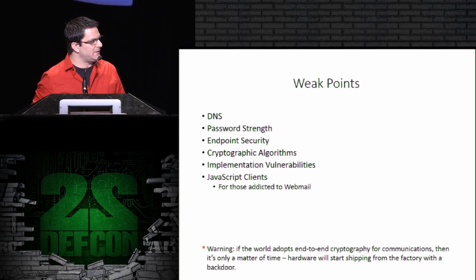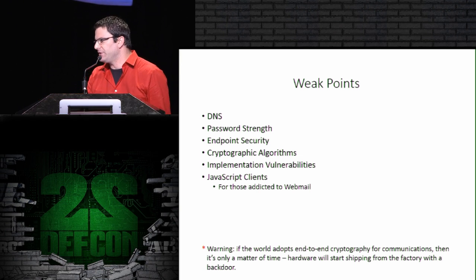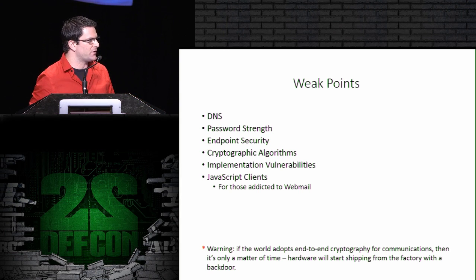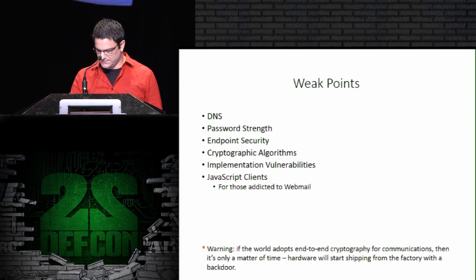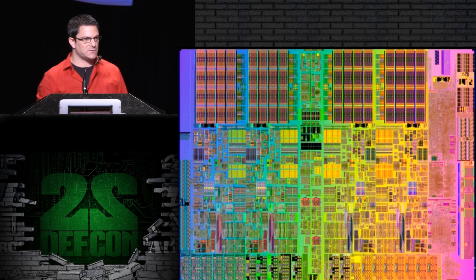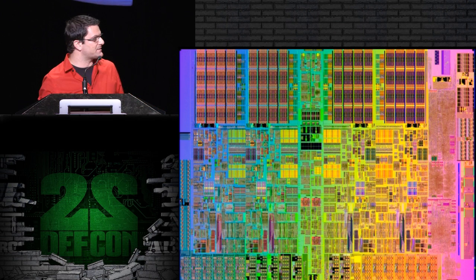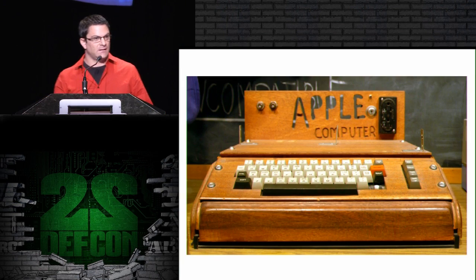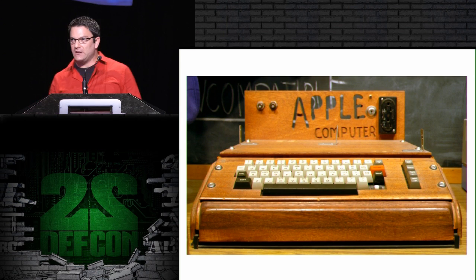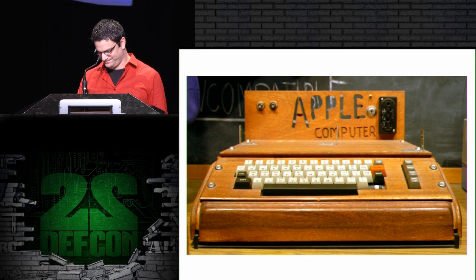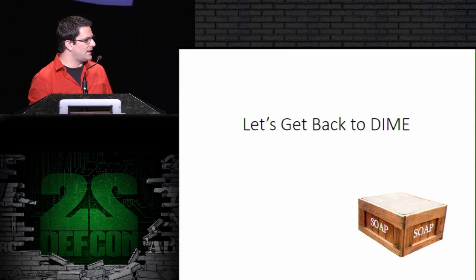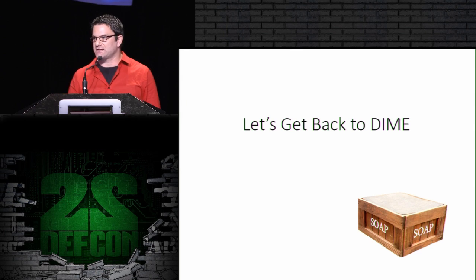What we need to be afraid of is that if everybody started using something like DIME and ZRTP to communicate, it wouldn't be long before we started seeing vulnerabilities embedded directly in the silicon. As kids we liked to play Where's Waldo — our kids might actually get to play 'where's the clipper chip.' All right, time to climb back down off my soapbox and get back to talking about DIME.